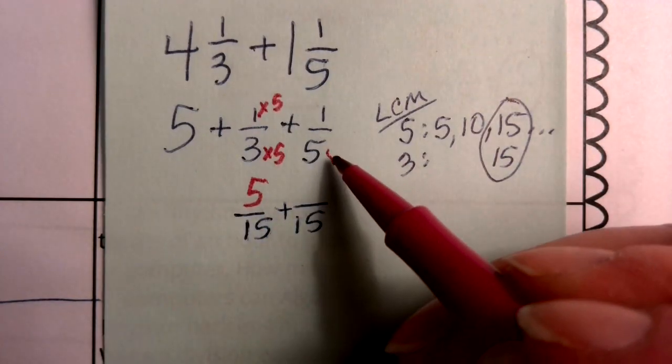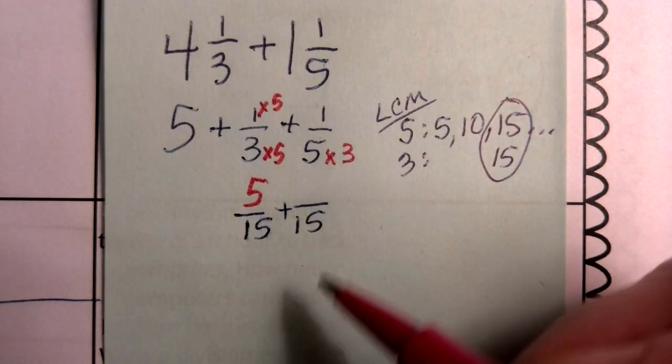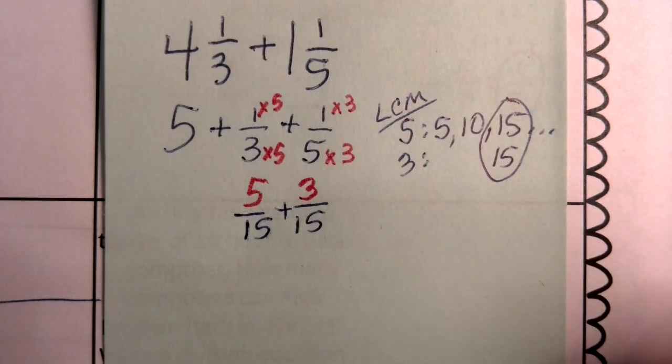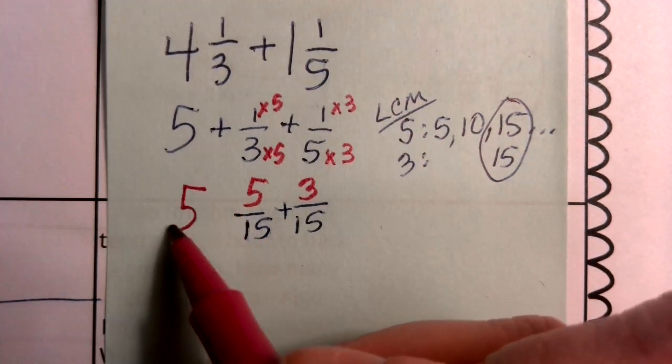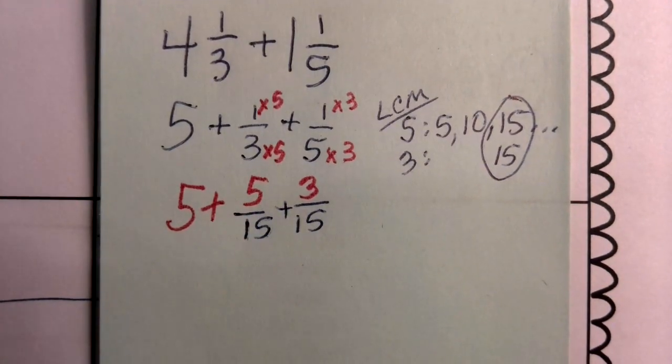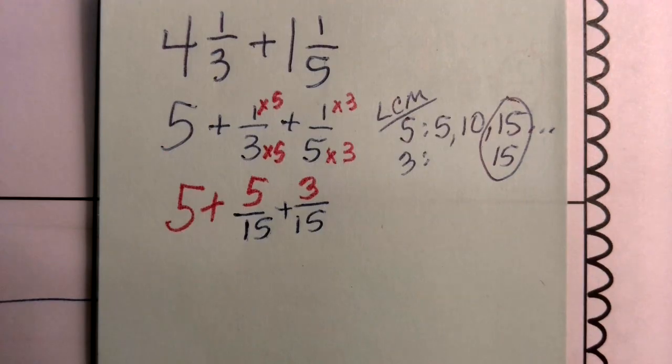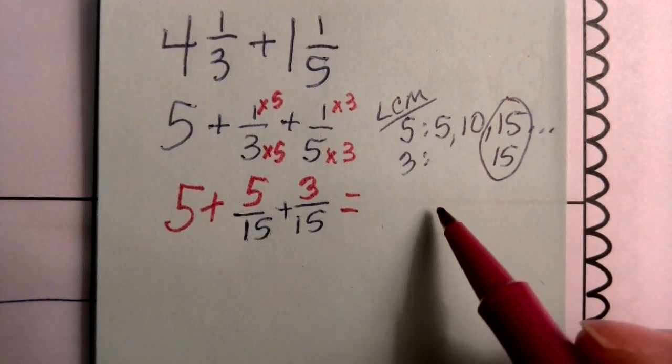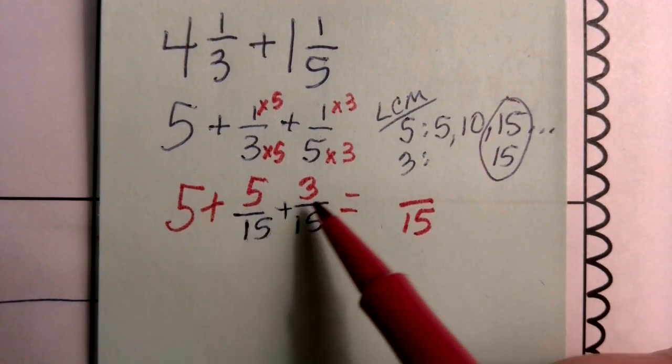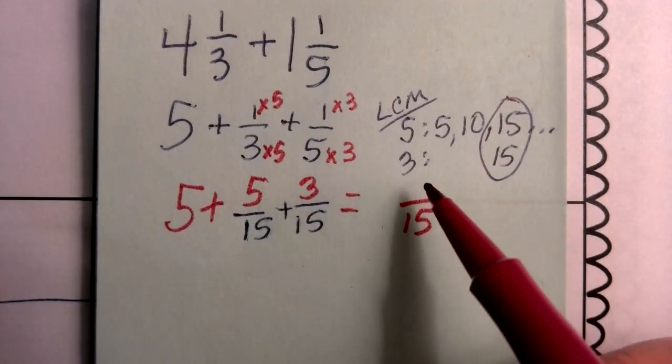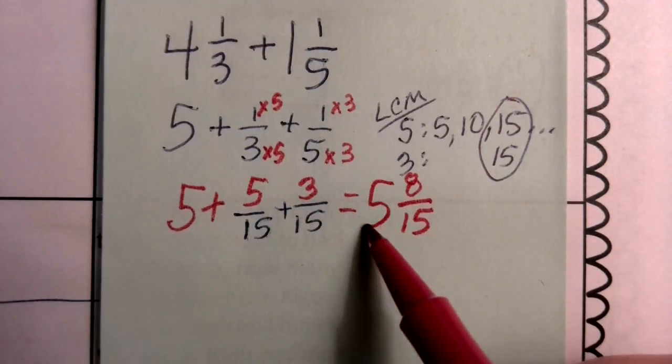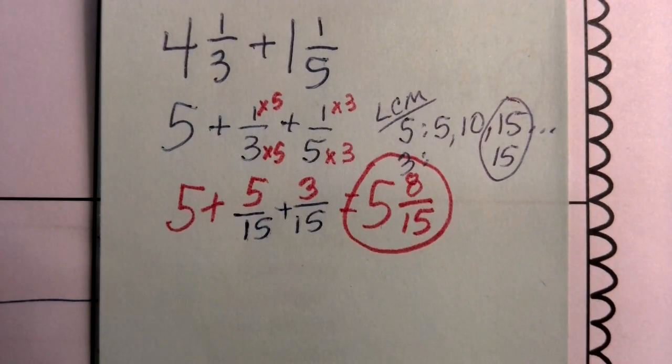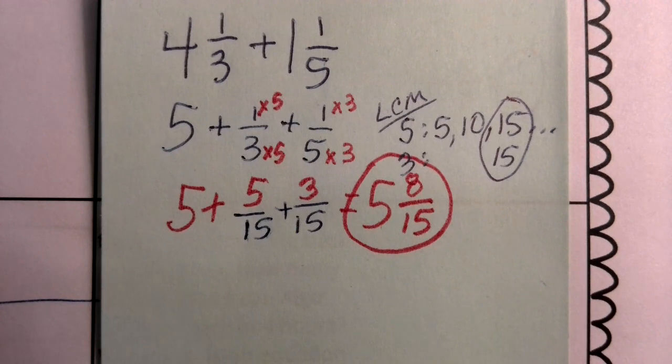We're going to do the opposite here. We're going to multiply by 3. This 5 times 3 gives me 15. Whatever I do to the top, I'll do to the bottom and vice versa. So 1 times 3 gives me 3. Now I still have this 5 stuck to the front. Don't forget about your whole number. But now I can actually perform my operation because I know that if I have 15 here and 15 here, those like denominators allow me to add the numerators. So 5 plus 3 gives me 8, and I can't forget about that whole number 5. So the answer to this problem is 5 and 8/15.